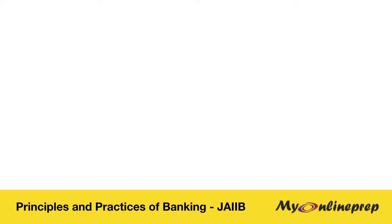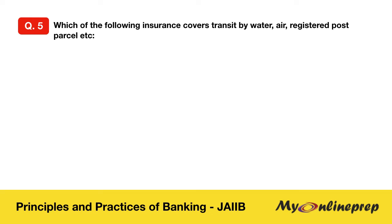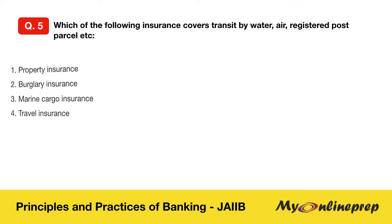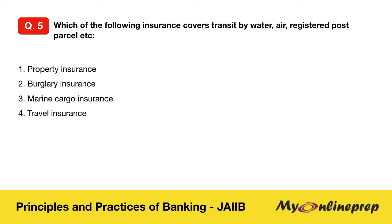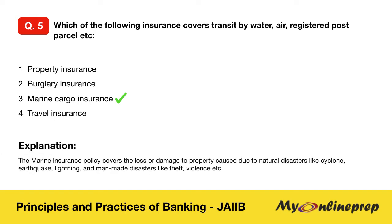Question 5: Which of the following insurance covers transit by water, air, registered post, parcel, etc.? Options are: property insurance, burglary insurance, marine cargo insurance, or travel insurance. Correct — marine cargo insurance. The marine insurance policy covers loss or damage to property caused by natural disasters like cyclone, earthquake, lightning, and man-made disasters like theft and others.